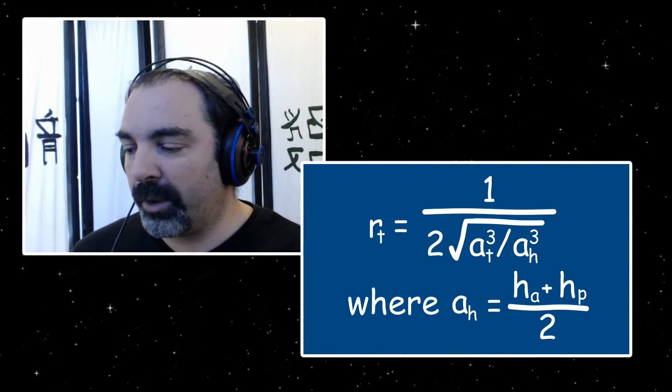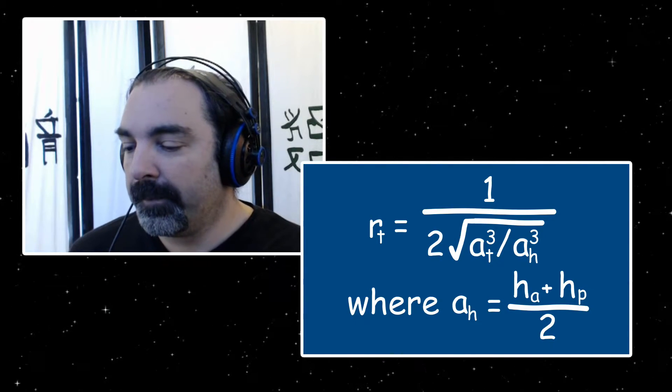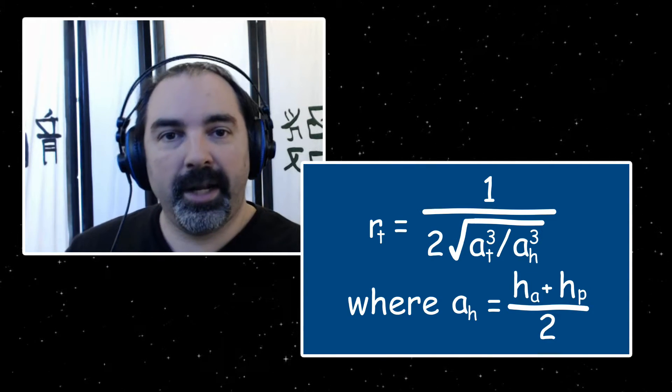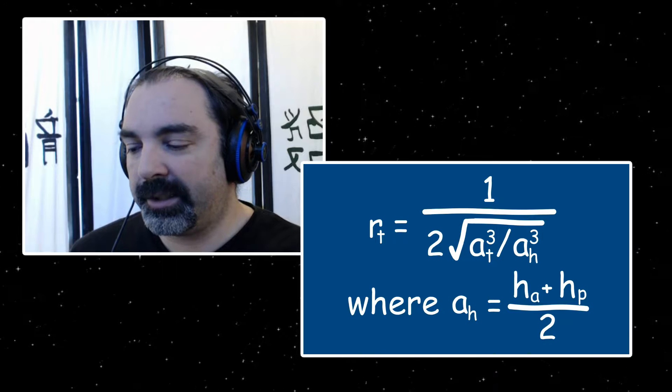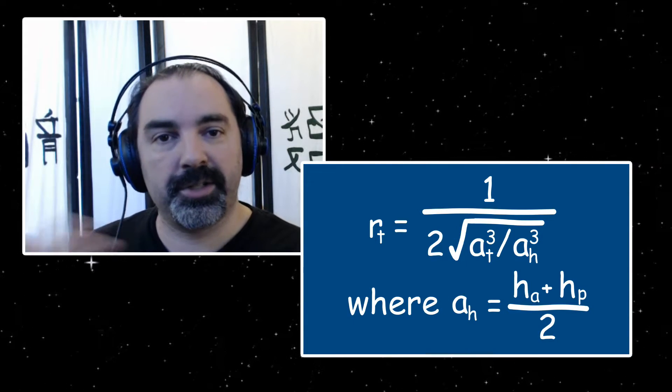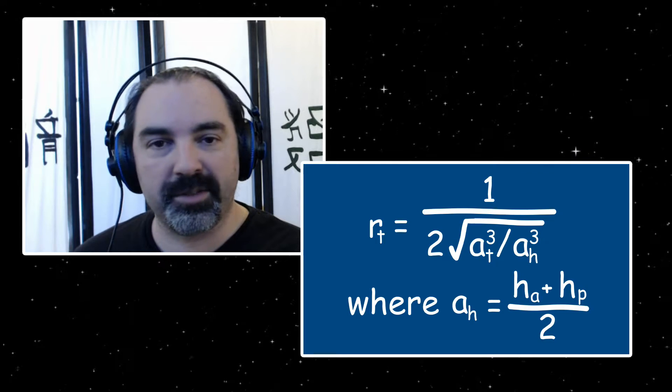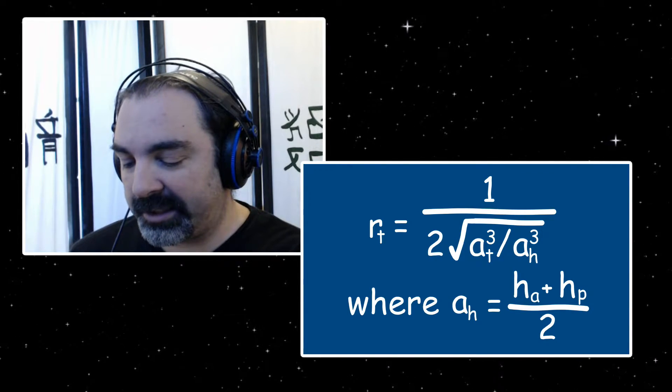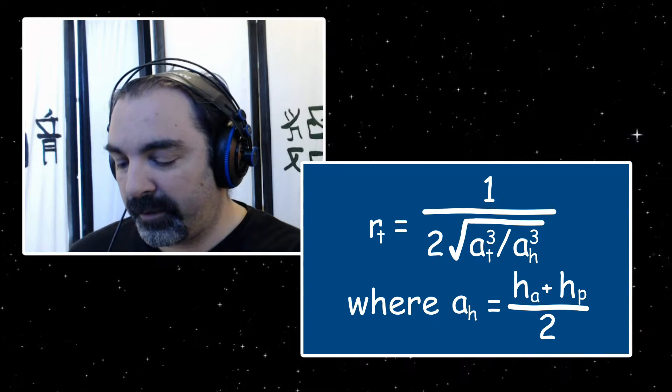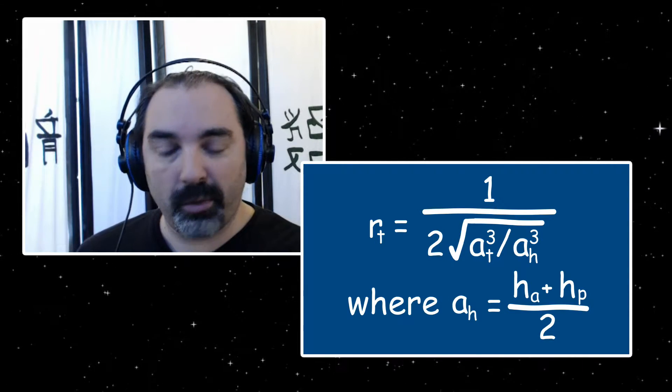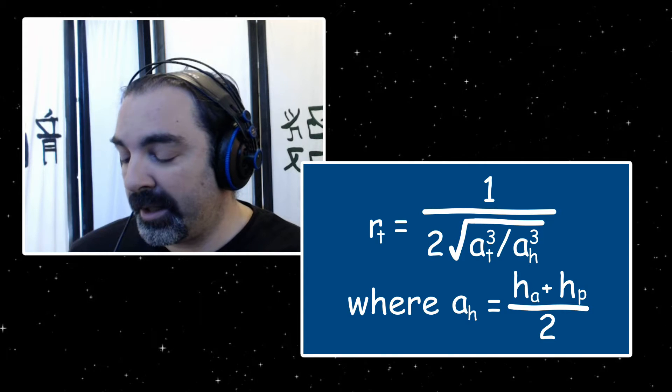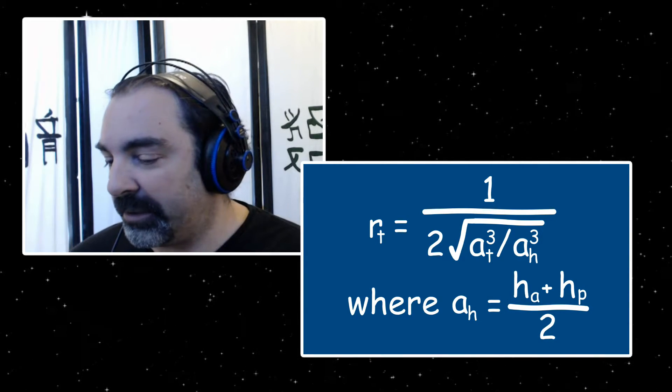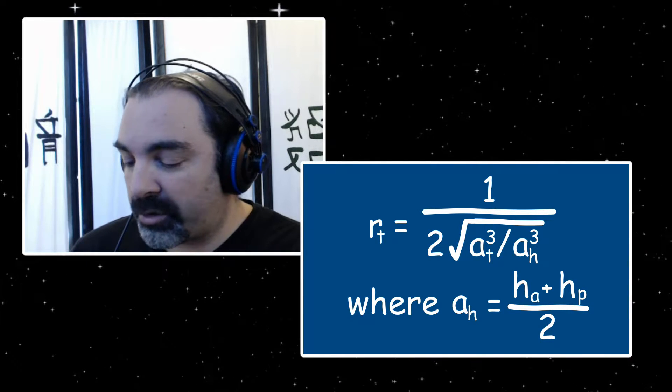So the next step is to store that number away in memory on my phone or whatever and start working on the rest of this equation. In the larger equation, a_t is the semi-major axis of our target. In this case it's Duna, so it's going to be the same as we had before, 20.7. If I take 20.7 and divide that by 17.15, I end up with 1.20699. We take the square root of that.